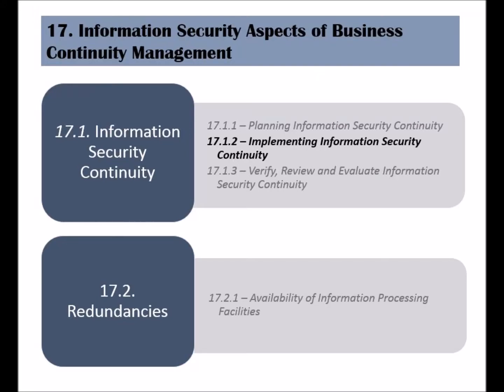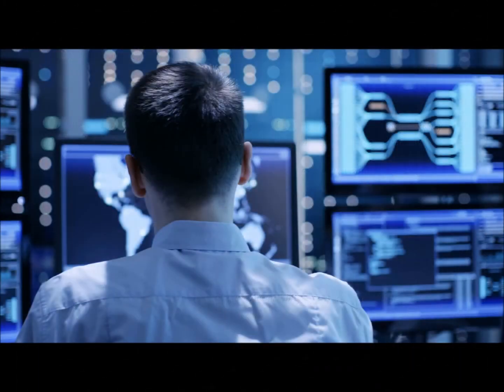The second control of the information security continuity category is called implementing information security continuity. The plan that the organization has put in place to ensure continuity of its information system security should be implemented, and this implementation is achieved by establishing and maintaining the required processes and procedures. Before defining the processes and procedures, the organization should ensure that it has enough and adequate resources to perform those activities.